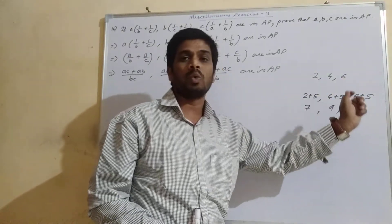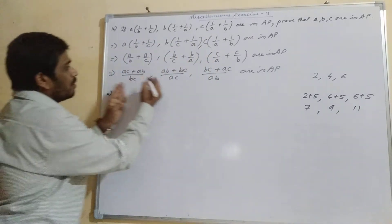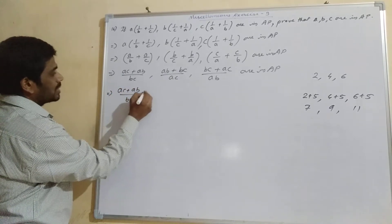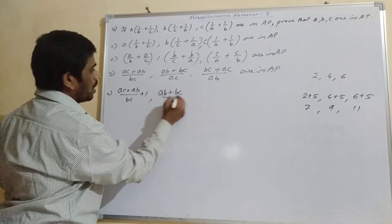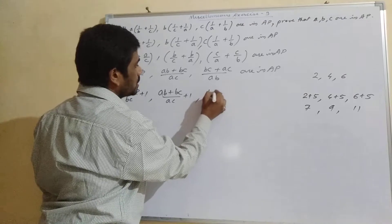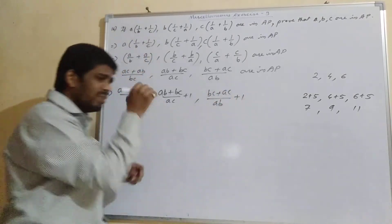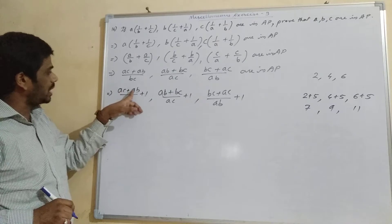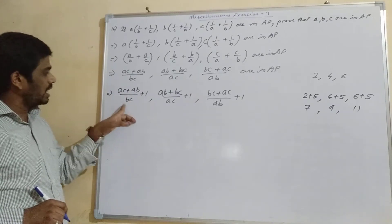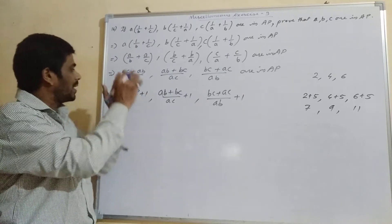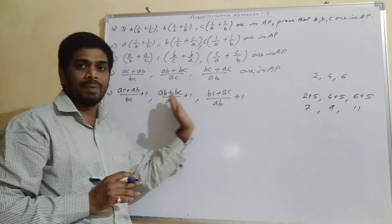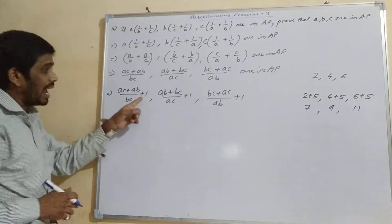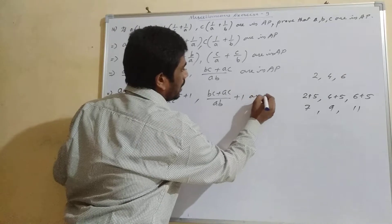So here also we add 1 to each term. So we get (AC + AB)/BC + 1, here (AB + BC)/AC + 1, and here (BC + AC)/AB + 1. We added 1 specifically because it will give us BC + AC + AB, AB + BC + AC, and AB + BC + AC in the numerators — making them equal. So that will also be in AP.